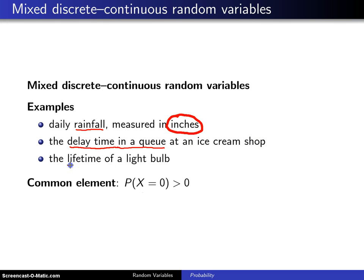The third example is the lifetime of a light bulb. When you hear lifetime, you again think of time, and that is going to be a continuous random variable, but some light bulbs you purchase, you bring them home, screw them into the socket, and they don't work at all, which means they have a lifetime of zero. And that is the discrete portion of the distribution.